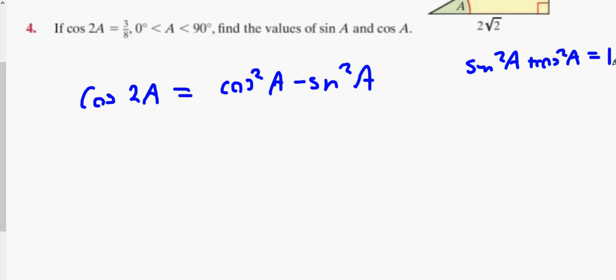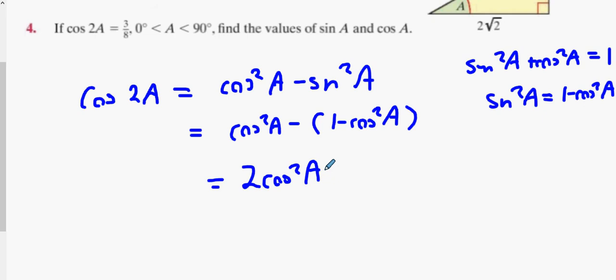So I got rid of one of them. Which one do you want to get rid of, sin or cos? Sin, why not. What's sin²A the same as? Cos²A minus 1. Then what does this formula become? 2cos²A minus 1 and we're saying that equals 3/8.